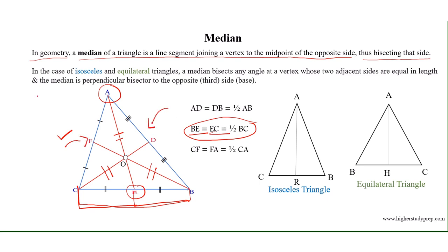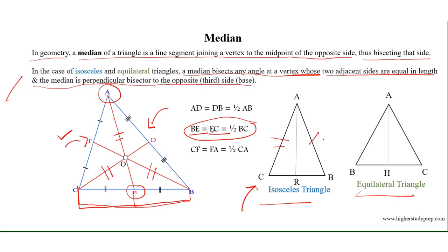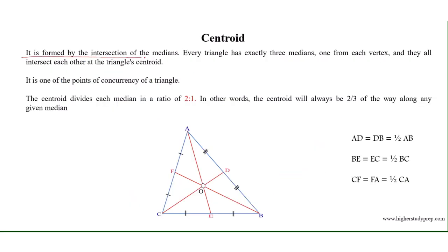In the case of isosceles and equilateral triangles, a median bisects the angle at the vertex whose two adjacent sides are equal in length, and the median is also the perpendicular bisector to the opposite side. For example, in an isosceles triangle where AC equals AB, AR is the perpendicular bisector on base CB and bisects vertex angle A so that angle CAR equals angle RAB equals angle A divided by 2. For the equilateral triangle, H is perpendicular to BC, bisects angle A, and bisects base BC.